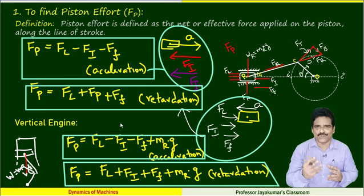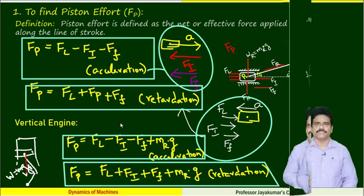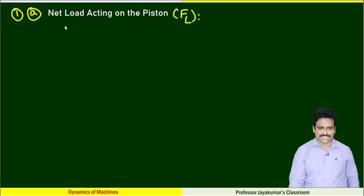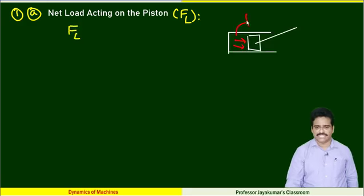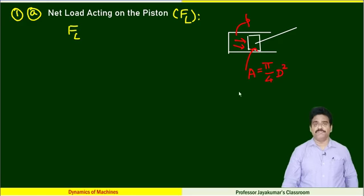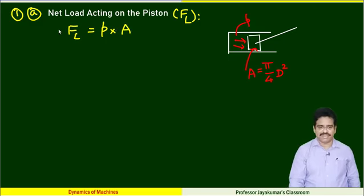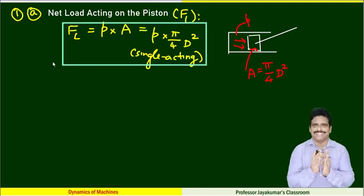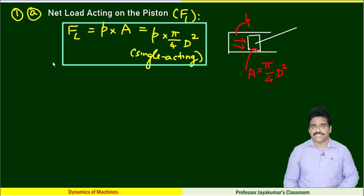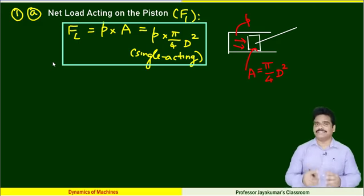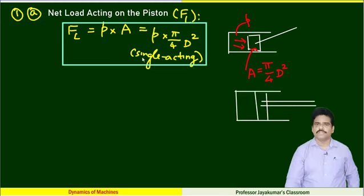In a vertical IC engine, we have one extra component — W = mg acting downwards — that needs to be taken into account. How to find the formula for net load acting on the piston? The pressure inside the engine is P and the cross-sectional area of the piston is A. FL equals the pressure of the gas multiplied by the cross-sectional area. This is the formula to find FL for a single-acting single-cylinder engine.